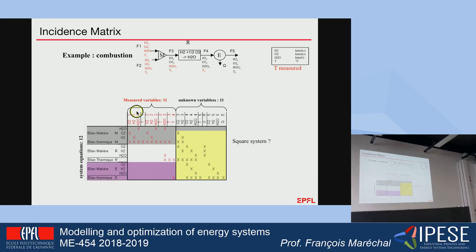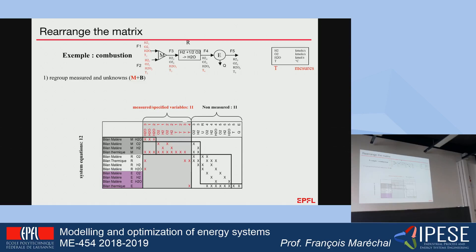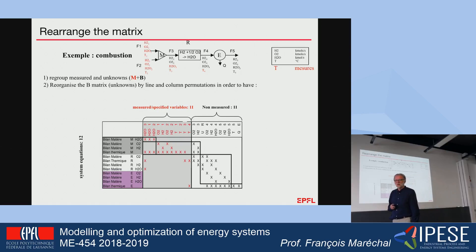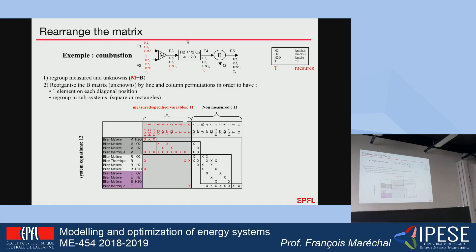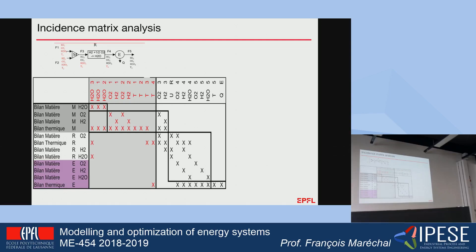Let's see what this means with my example. I have the rearranged matrix with all measured variables on one side and unknowns on the other, forming the incidence matrix with a red part showing where specified values appear in equations and where unknown variables are. I am going to reorganize the matrix by trying to place one element on the diagonal of the non-measured variables, which allows reorganization through permutations of lines and columns, and I try to identify squares and rectangles.